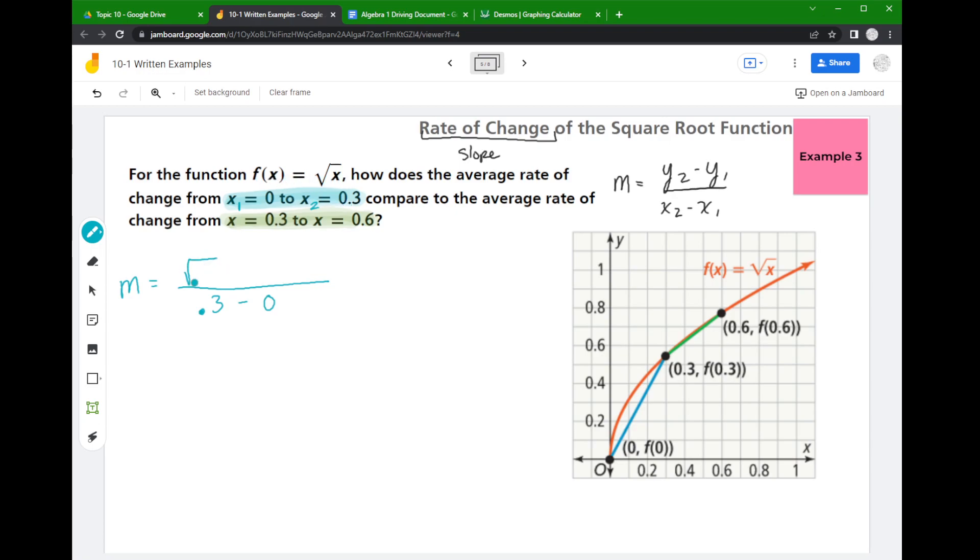So let's try it with the blue one. Down below, if I'm doing x2 minus x1, I'm going to do 0.3 minus 0. So that's the easy part. So if I know my x2 is 0.3, to get my y2 I plug it into the equation, so I'd get the square root of 0.3.